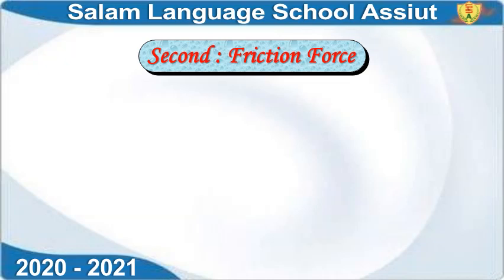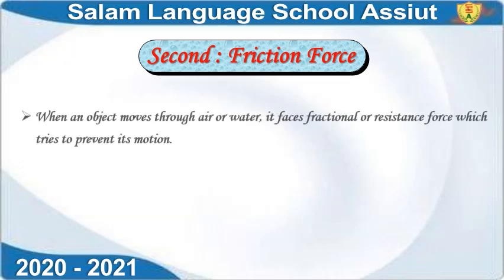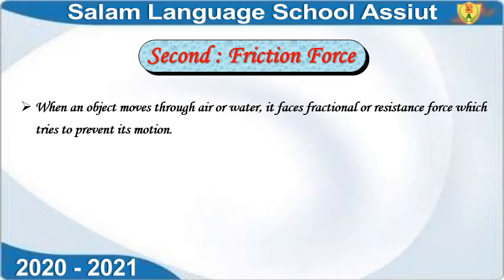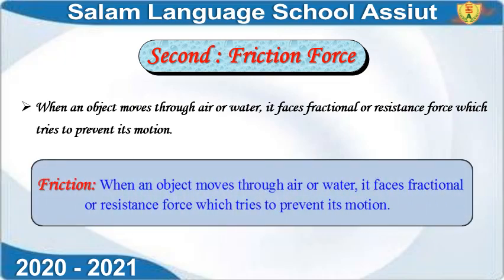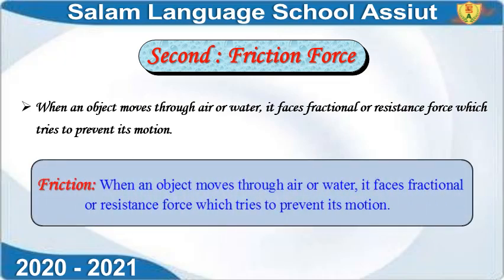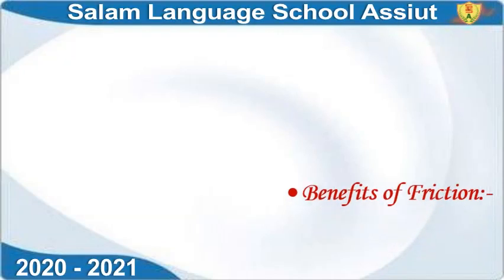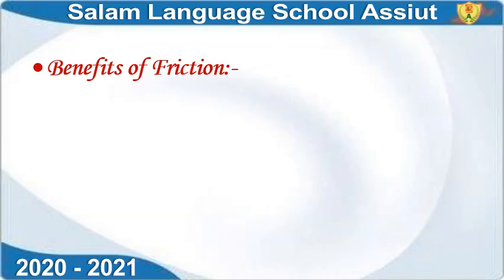Now, this is considered one of the harms. When an object moves through air or water, it faces a frictional or resistance force which tries to prevent its motion. The definition of friction: when an object moves through air or water, it faces friction or resistance force which tries to prevent its motion.